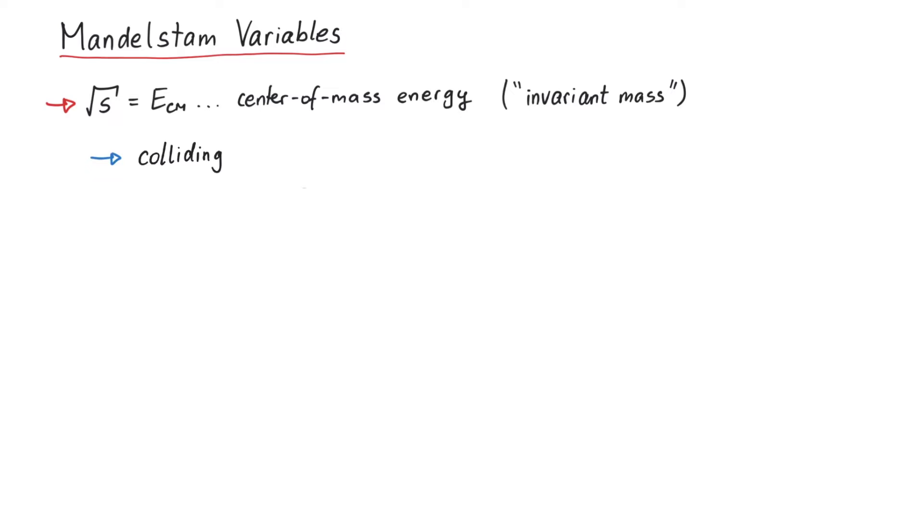First we assume a so-called colliding beam experiment. This means that p1 and p2 move towards each other. If we assume equal masses for simplicity, the square root of s is equal to two times the energy of the particles, so proportional to E.